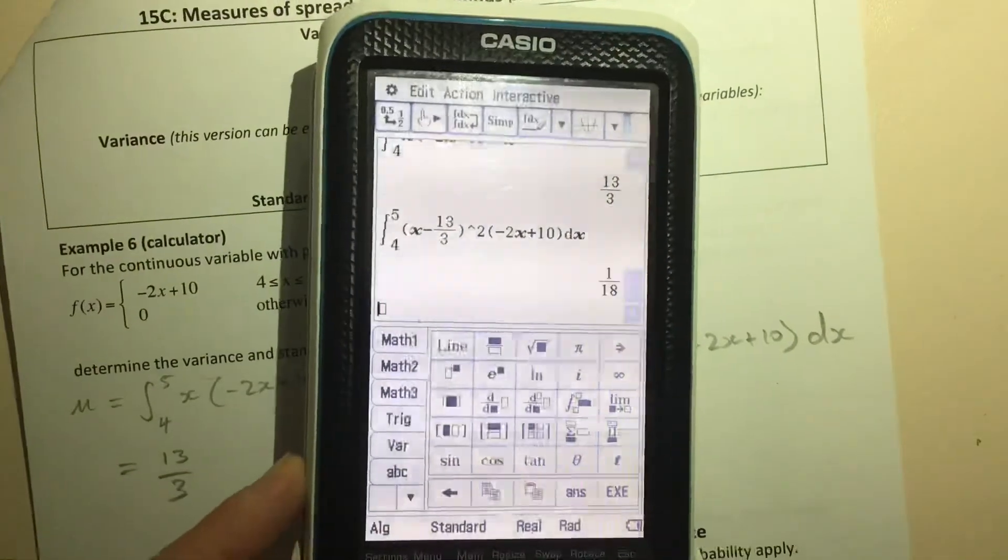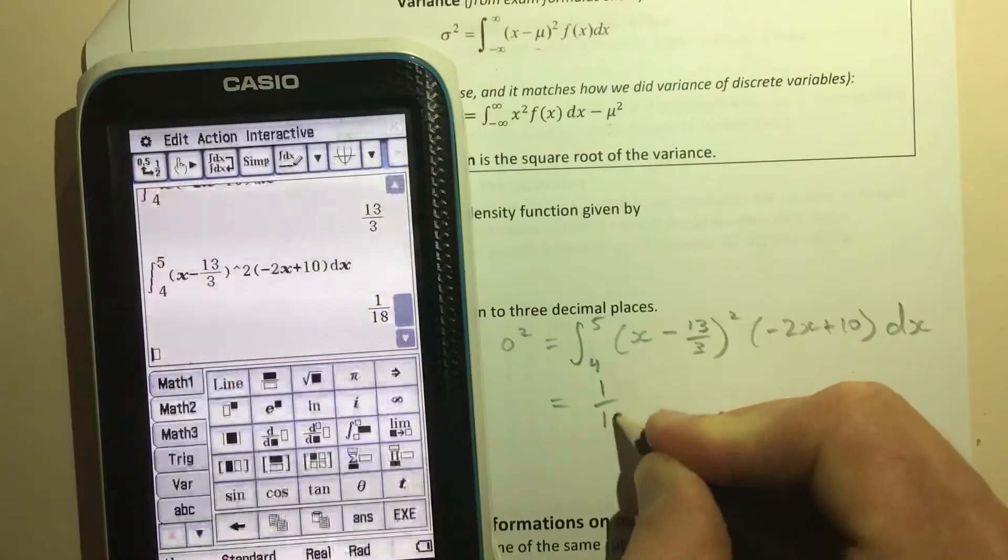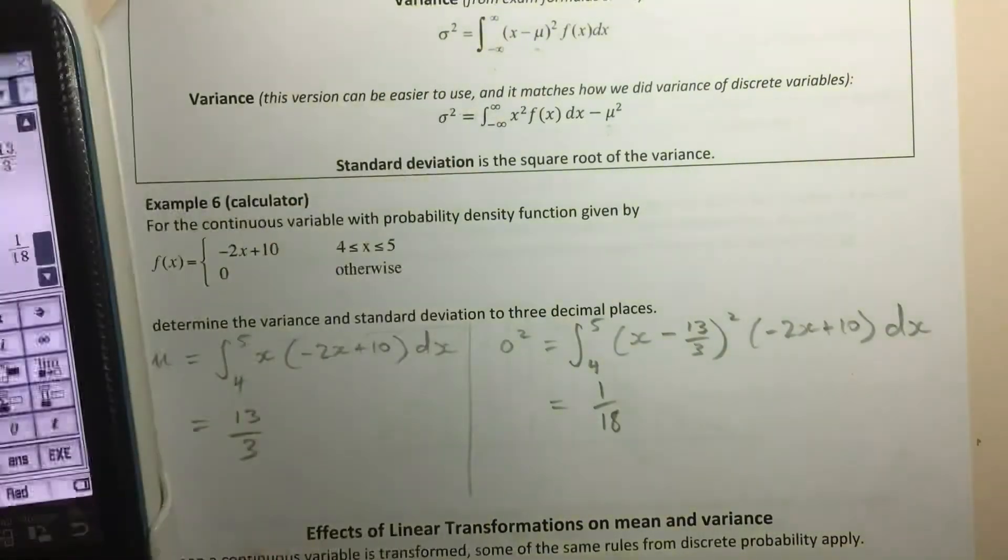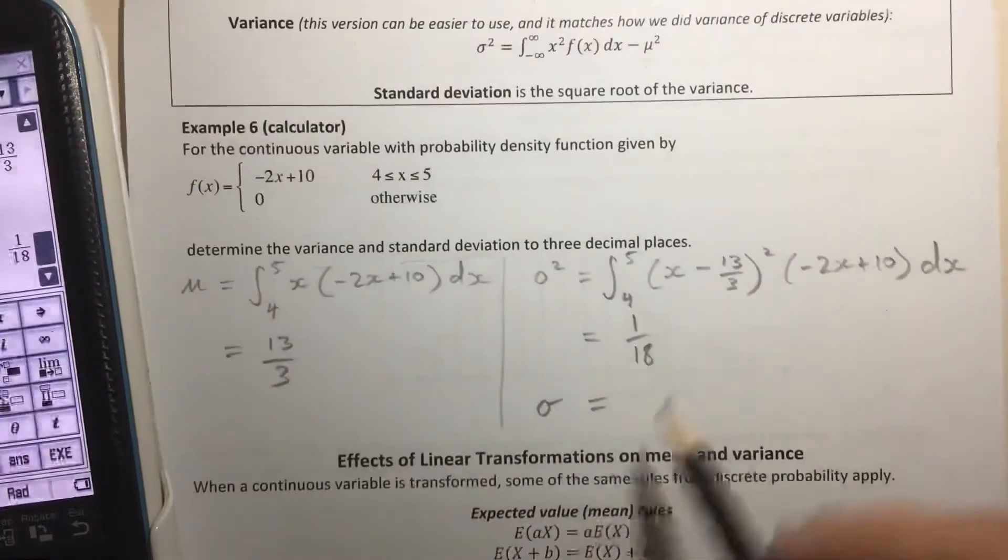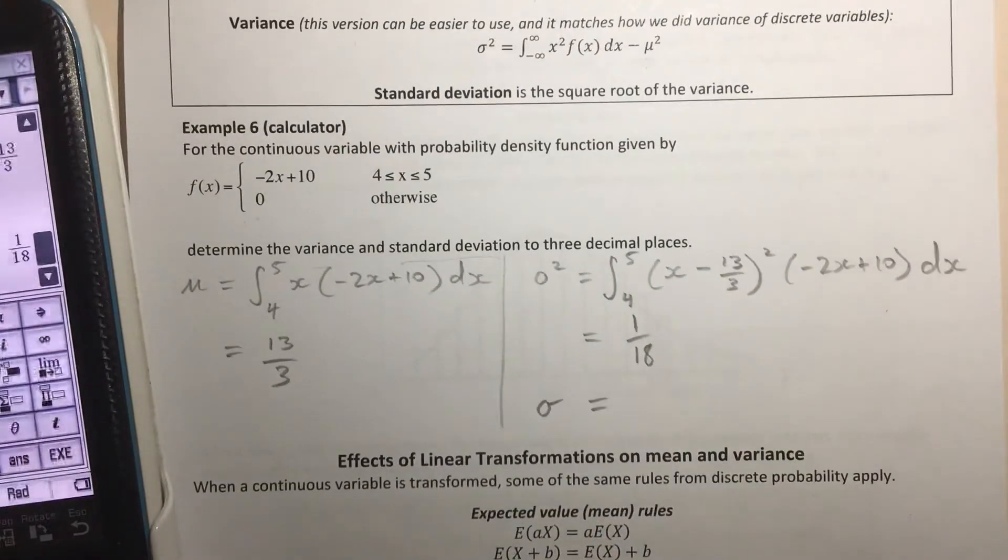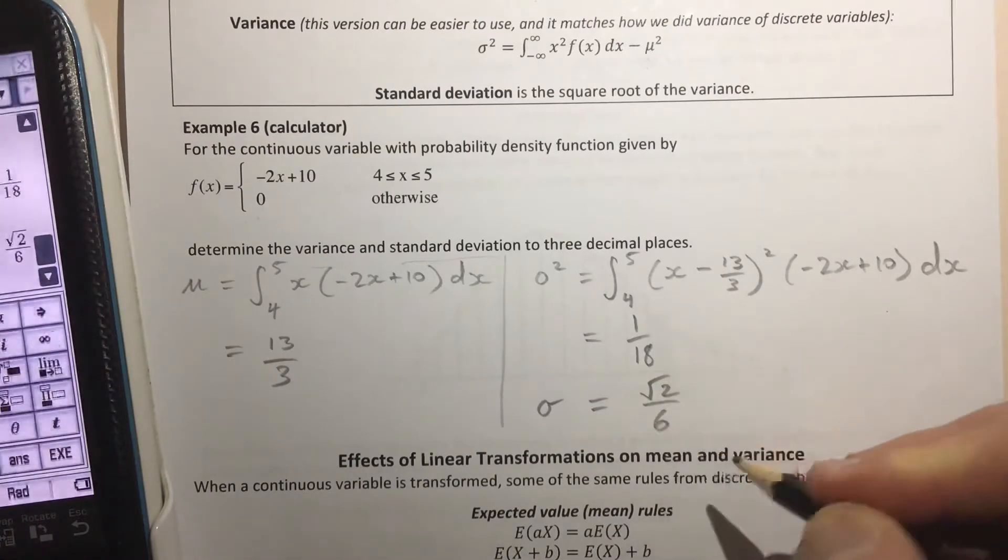So it's going to reuse the integral that's already there, and it's (x - 13/3)². And that gives us the variance. Okay. So that equals 1/18. And of course, the standard deviation, that's just the square root of the variance, so we can write that as √(1/18), which is √2/6.